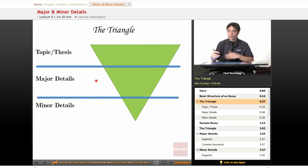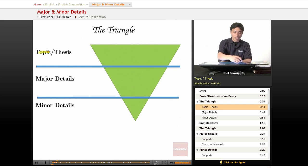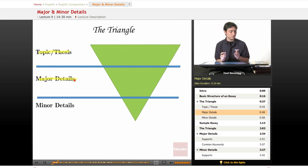We got a triangle here. The triangle represents what's most broad and what's most narrow. Your topic and thesis is the most general thing that you can come up with. And below that, we have what are called major details. These are details that are still connected to the topic and the thesis somehow, but they're a little bit more narrow, a little bit more specific.